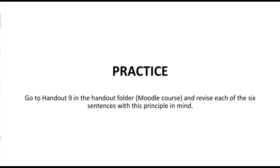So I have some practice for you. Go to handout nine in the handout folder in the Moodle course. There are six sentences, and I want you to revise each of them with this principle in mind. Look for the 'of's — sometimes you can find nominalizations that way, and sometimes you can't, but in most cases you'll find 'of's. Take out the nominalizations and make active verbs out of those nominalized verbs. Edit as much as you like, but really pay attention to those sentences in the light of this principle. When you've done that, the next video will walk you through all of those examples.